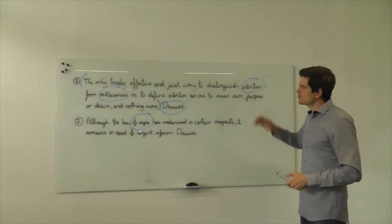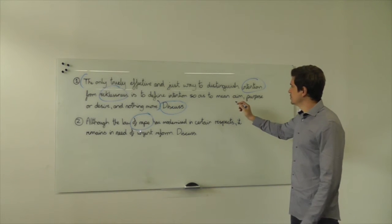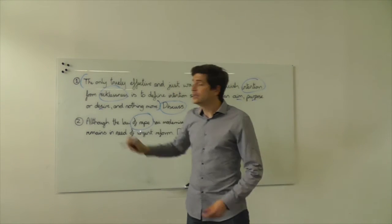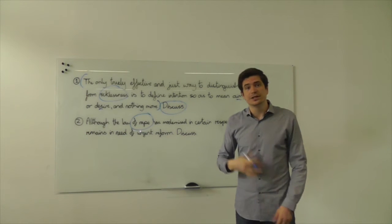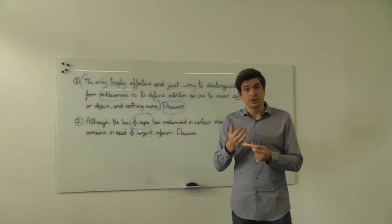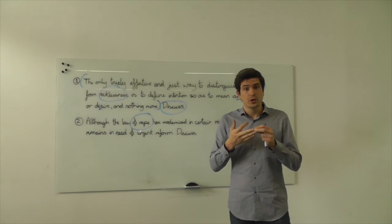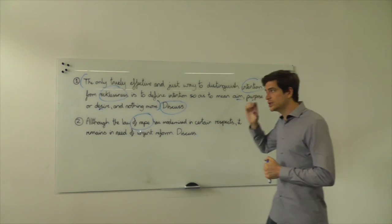So you can for example then think, okay, is it true to say that intention isn't defined simply in terms of aim, purpose or desire? Well yes it is. Direct intention is defined in these terms but oblique intention as defined within the case of Woolen is defined as a virtual certainty. It's foreseen by the defendant as a virtual certainty and then the court may choose or a jury may choose to find an intention.